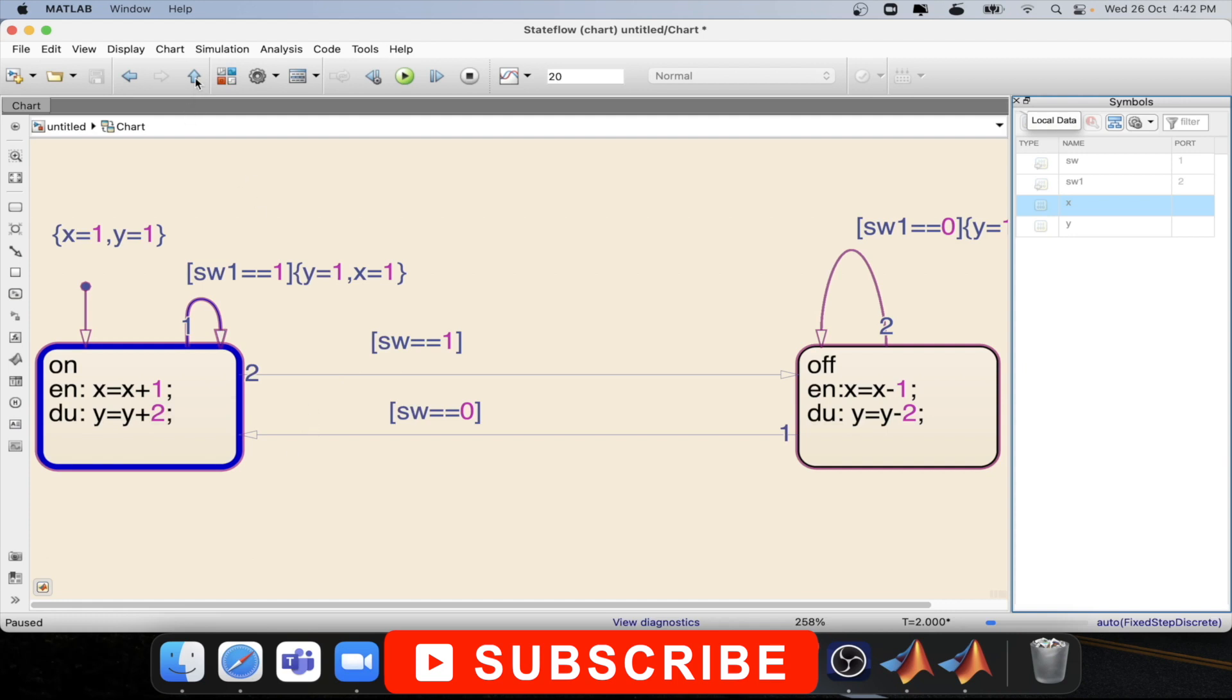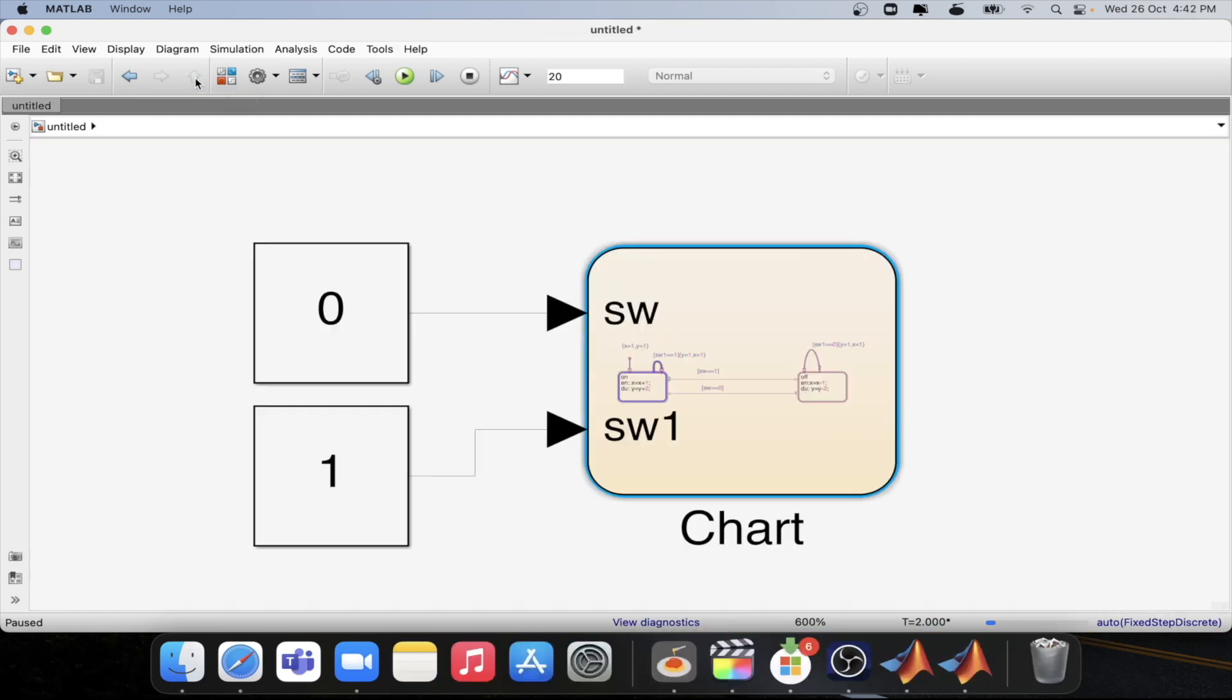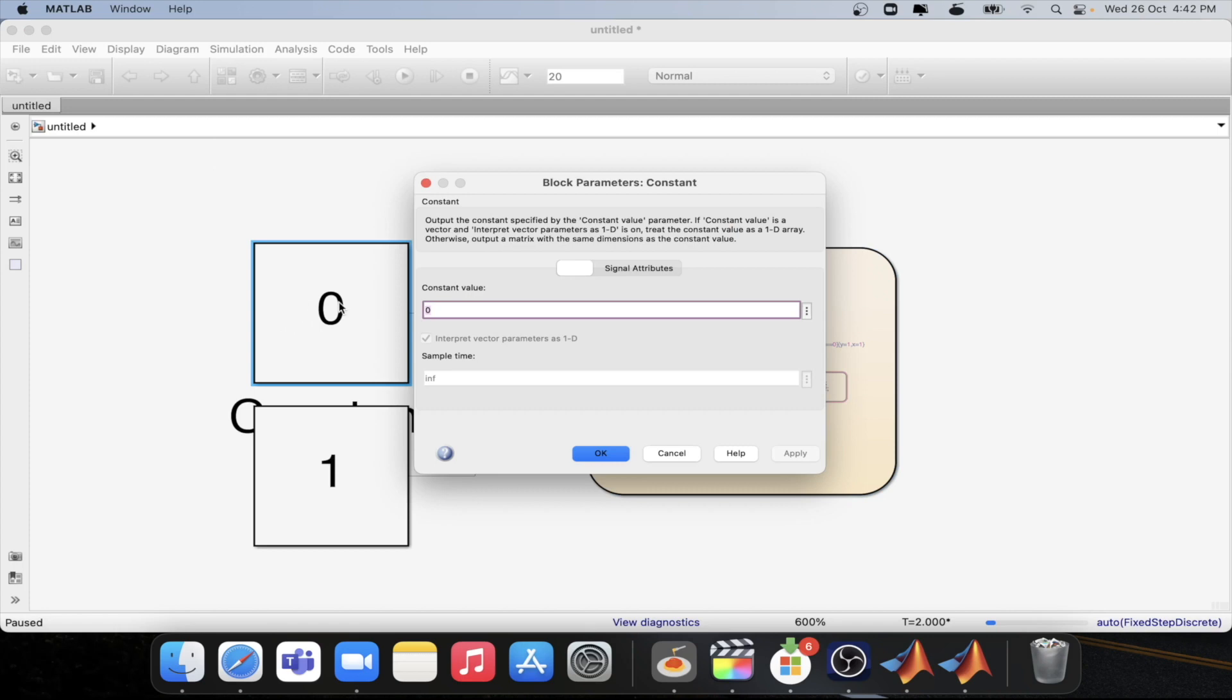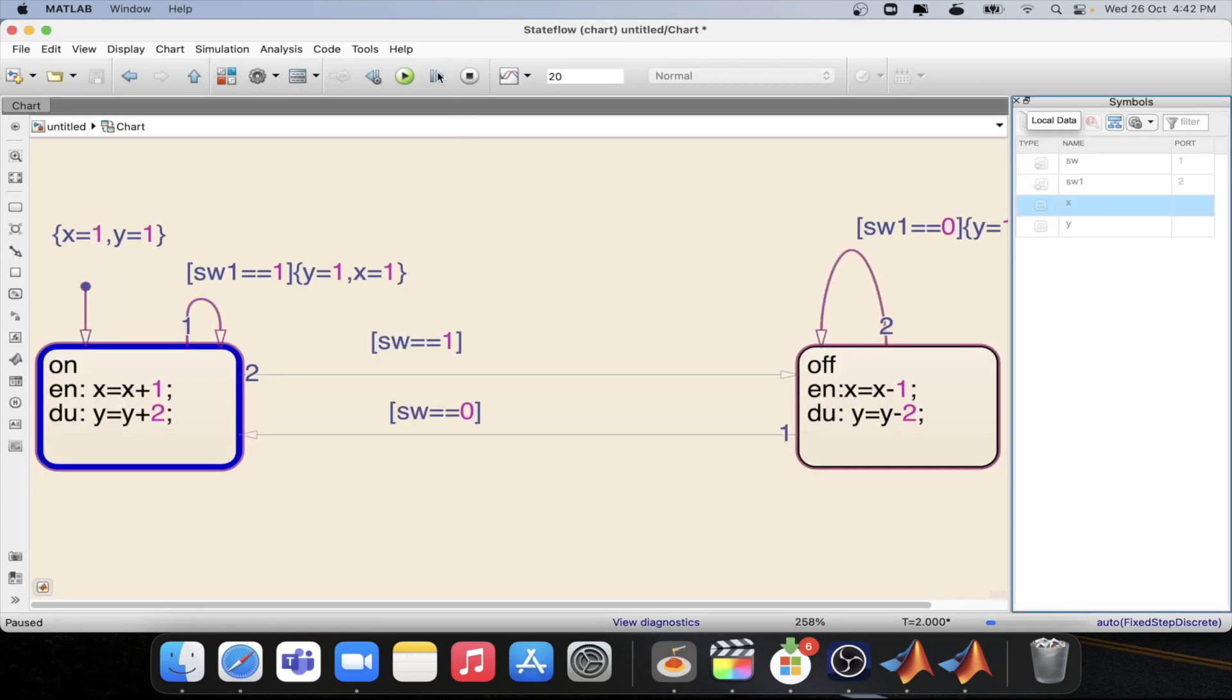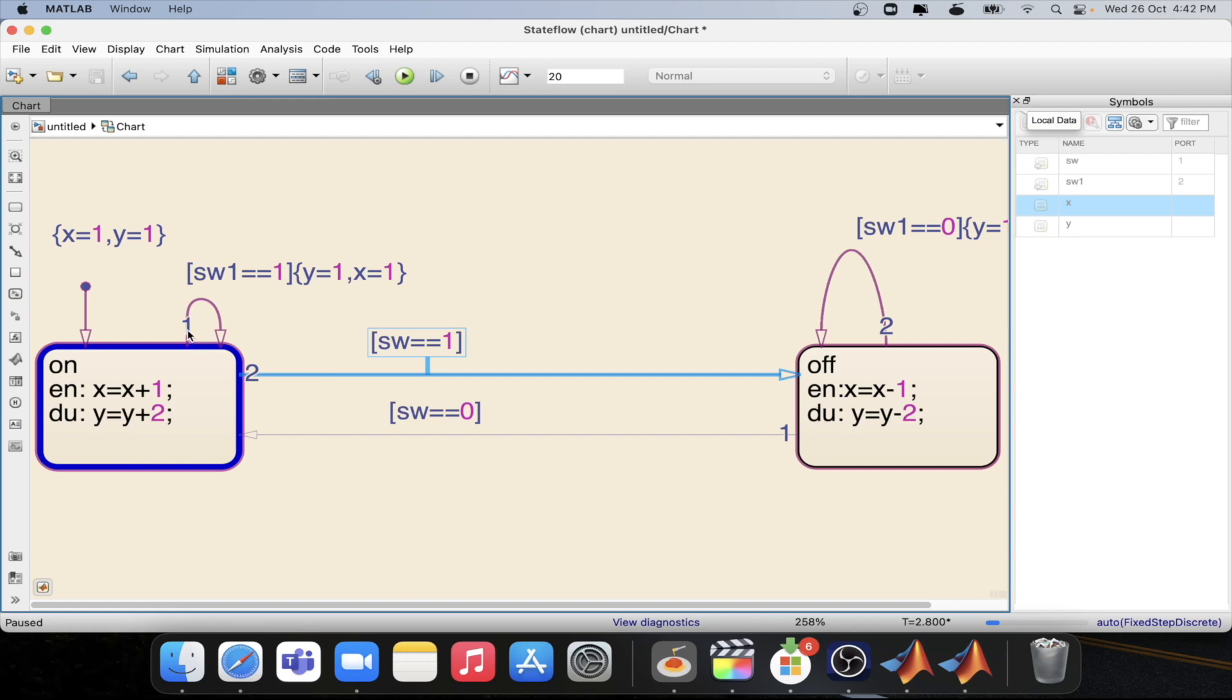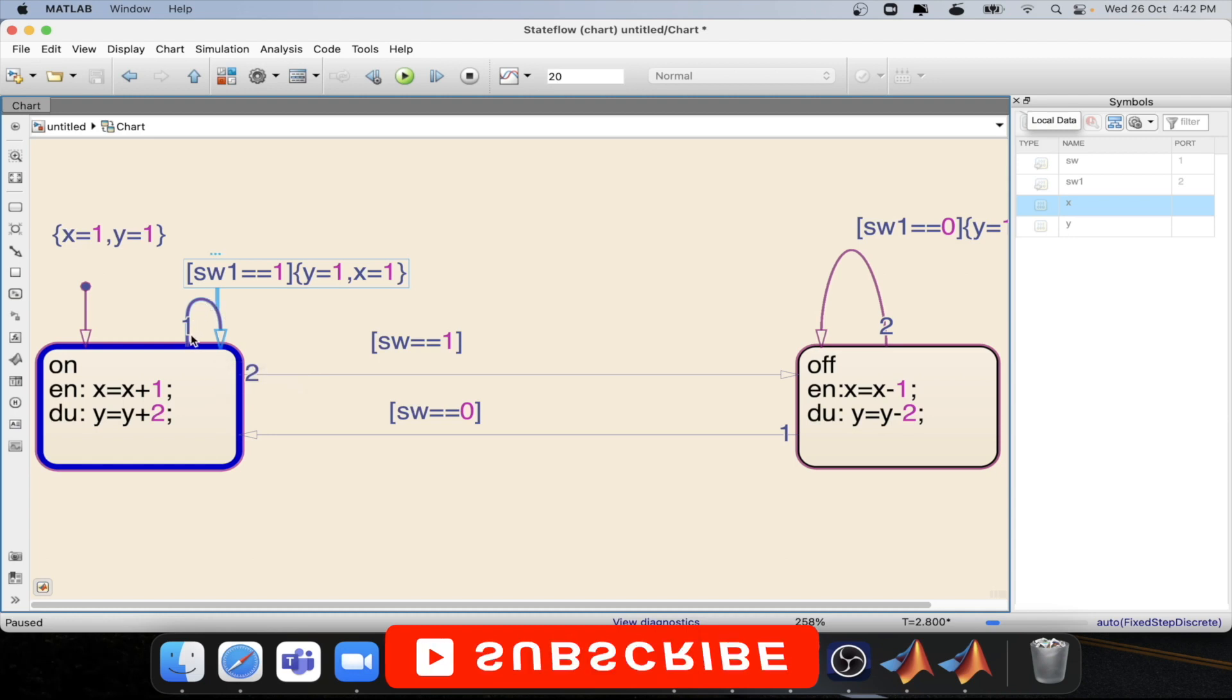Now let's enable the switch condition and see how it is happening for the other state. Now both the conditions are true. Now step again. So it is now not able to take the transition of this one because this transition has more priority. So this is taking this transition. So we need to disable this transition. Then only this will be able to go to the off state.